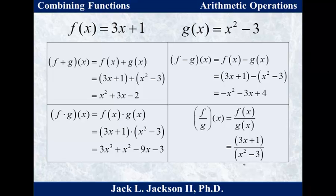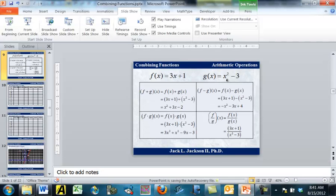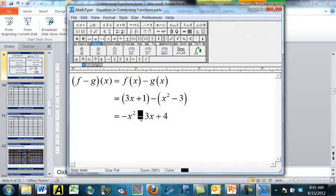Similarly, f minus g of x: we write f of x minus g of x. This time when we subtract, we drop the first parentheses, but for the second set we use the distributive property to multiply the negative 1 across, giving negative x squared plus 3. Reorganizing in decreasing order, that's negative x squared plus 3x plus 4.